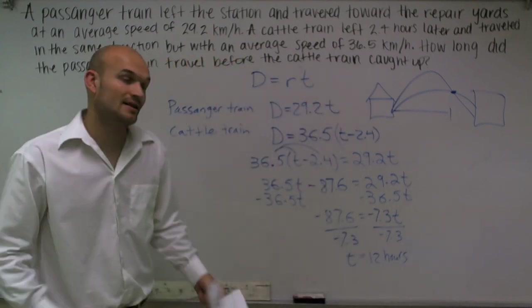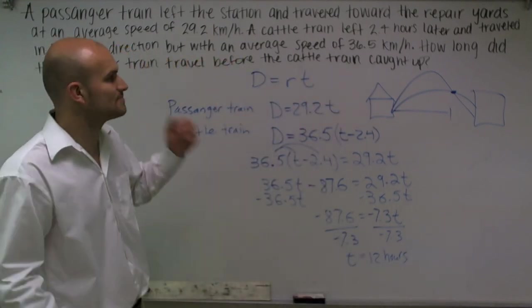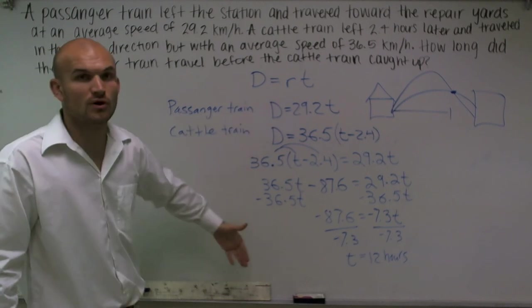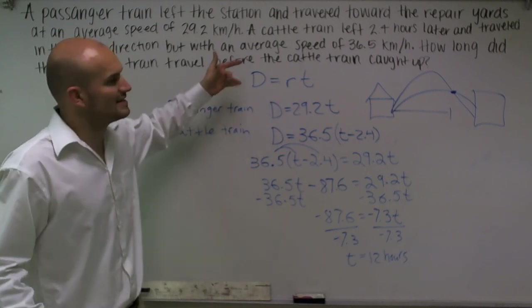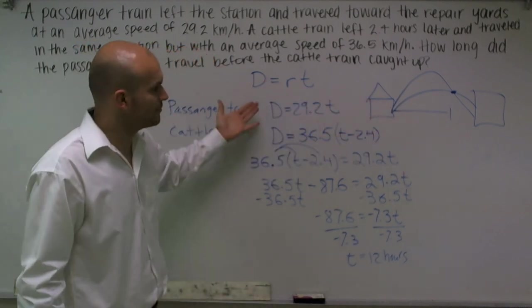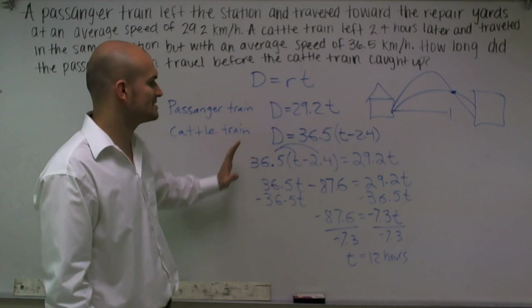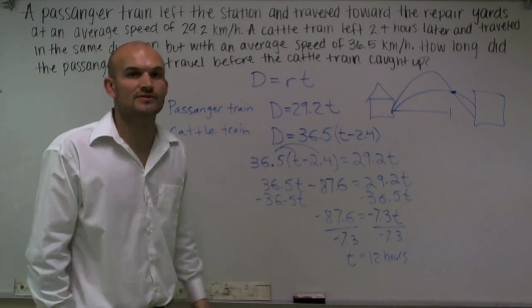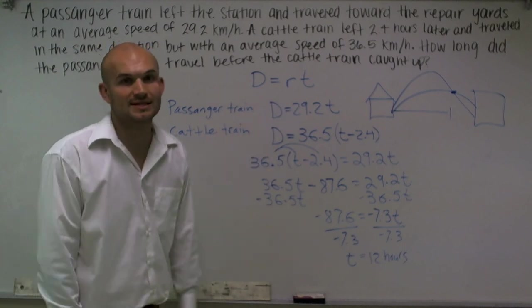And that is going to be our final answer. So we know that the time that it took for them to meet equals 12 hours. So the really important thing is know your equation, make sure you draw a diagram, and just set up your information and try to set up your known equation that you can solve for your missing variable. And that's how you solve the distance rate time problem. Thanks.